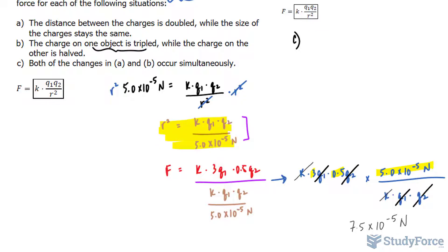And in part A, we were told that the distance between the charges is doubled. So I'll write down F, much the same way I did this. F is equal to K times 3 Q sub 1 times 0.5 Q sub 2. And then I'll divide this by R times 2. So we have R squared here.